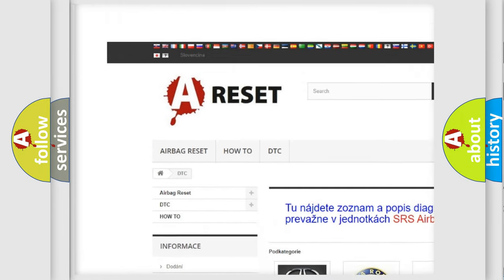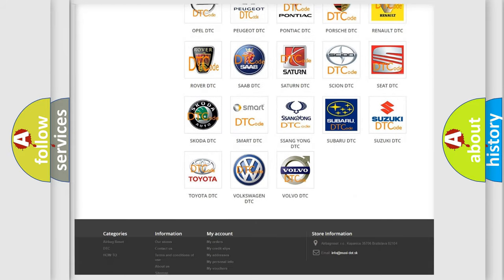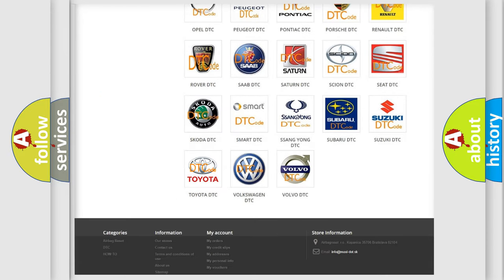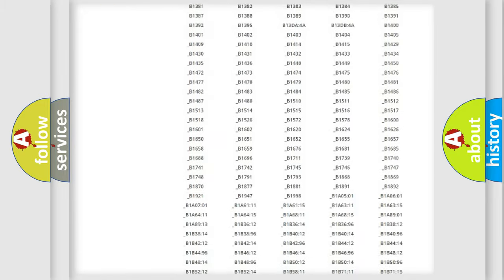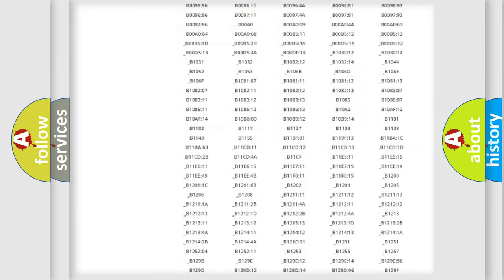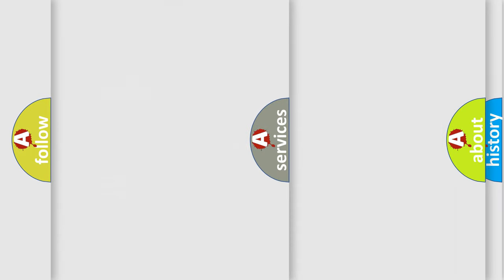Our website airbagreset.sk produces useful videos for you. You do not have to go through the OBD2 protocol anymore to know how to troubleshoot any car breakdown. You will find all the diagnostic codes that can be diagnosed in Toyota vehicles.